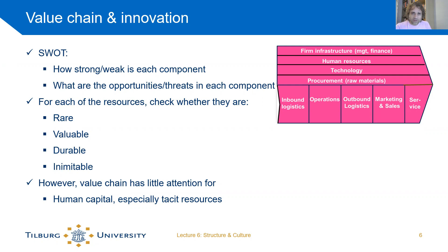So the value chain is a pretty useful but very basic tool to analyze the internal workings of an organization. The main drawbacks are that it mostly applies to organizations that make products and less to organizations providing services, or those with more platform-type processes.